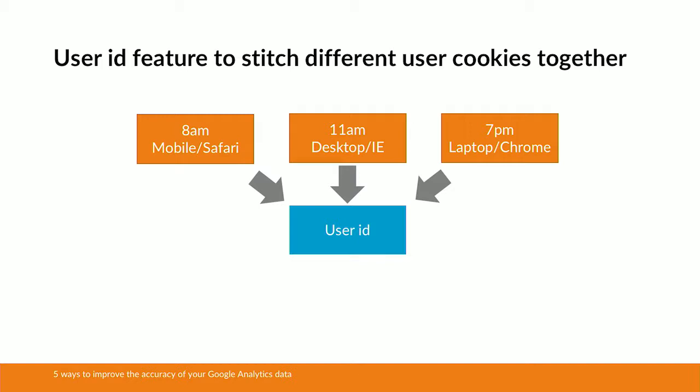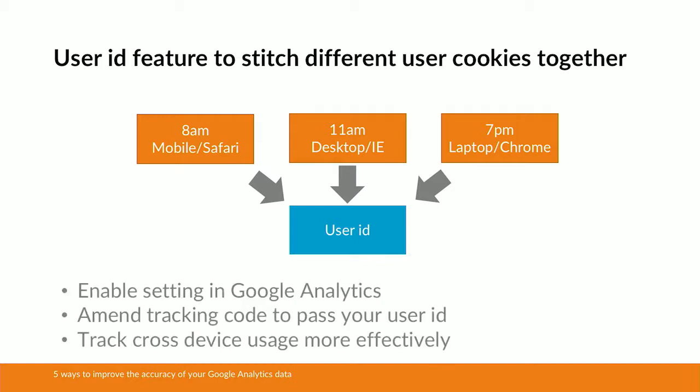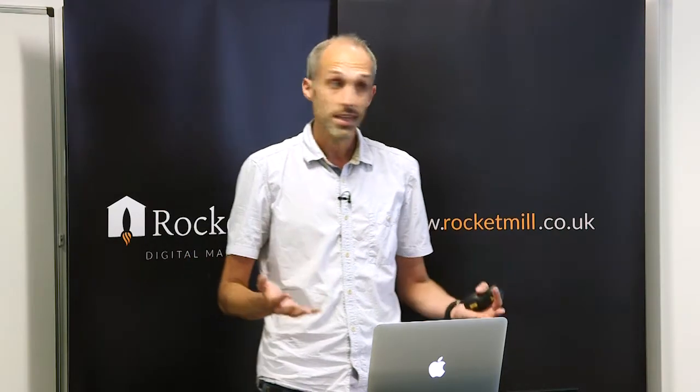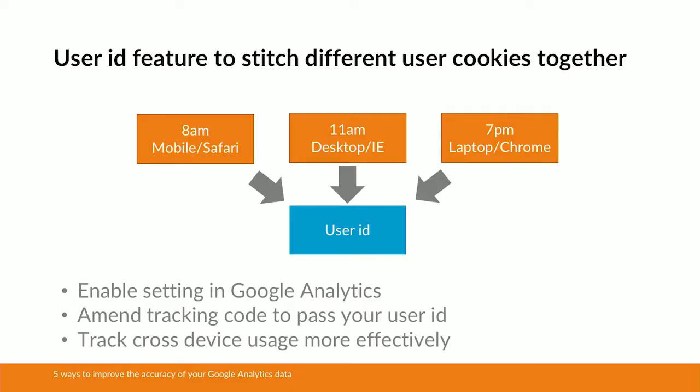In our example, that's bringing the three unique users back to one common user ID. In order to achieve this we first need to enable this setting within the Google Analytics interface, then amend our tracking code on the website to pass the user ID and associate it with each of these user cookies. Once that's set up and running, it enables you to track cross-device usage a lot more effectively. It also unlocks a couple of additional reports in Google Analytics, which means you can get more insight from your data and understand your users in a lot more detail.